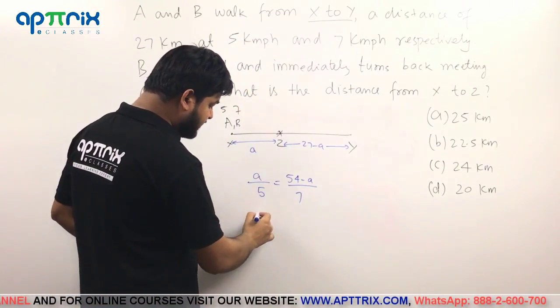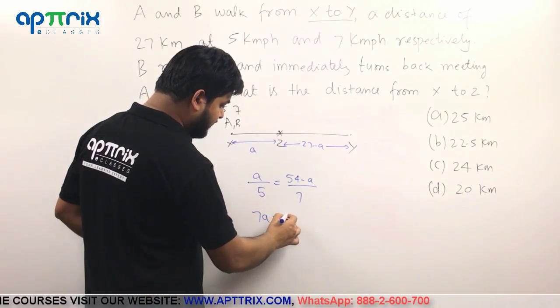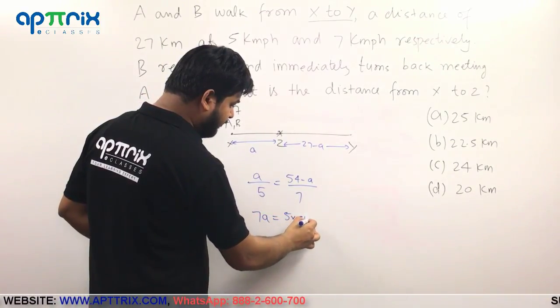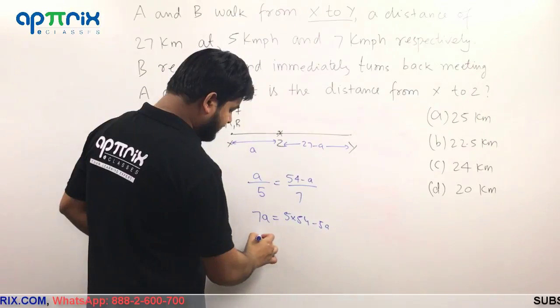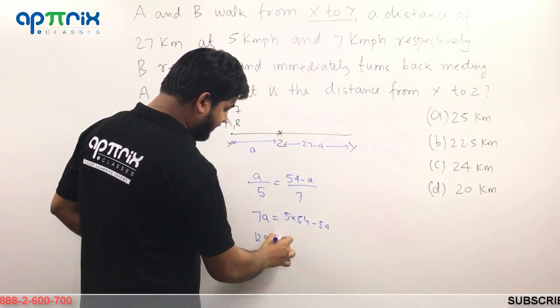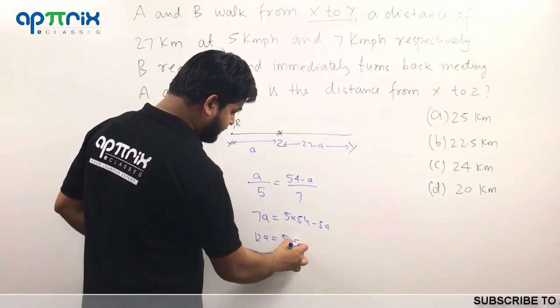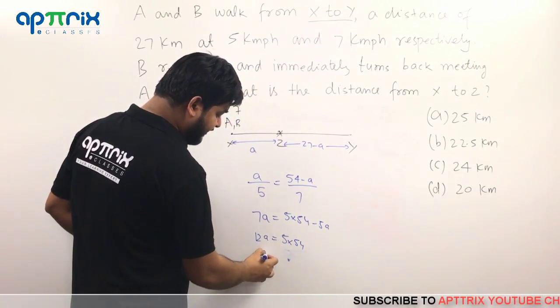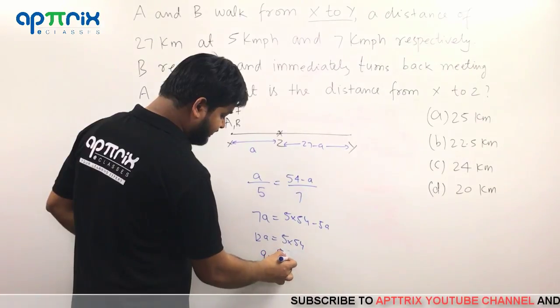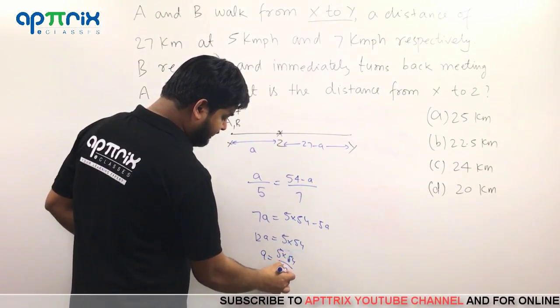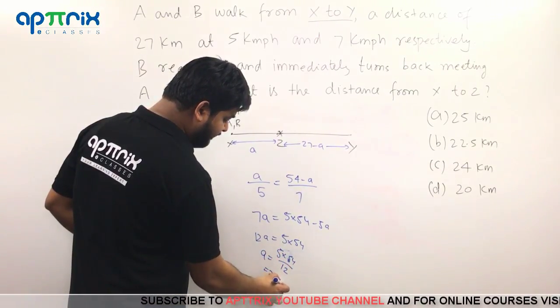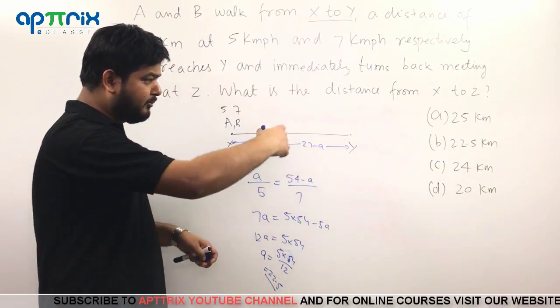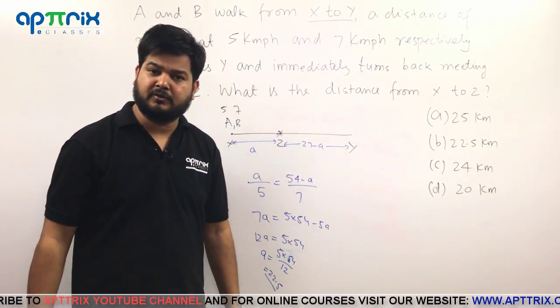Now you will do some cross multiplication. It will give you 7A is equal to 5 times 54 minus 5A. So it will be ultimately 12A giving you 5 times 54 divided by 12. In the next step you have to divide by 12. So 5 times 54 divided by 12. That will give you 22.5. And therefore you mark the answer and you become happy that you have solved one question.